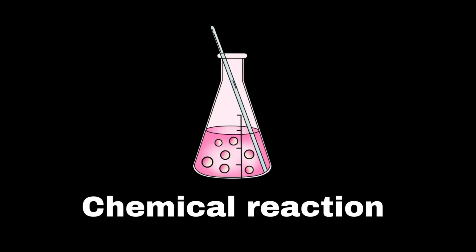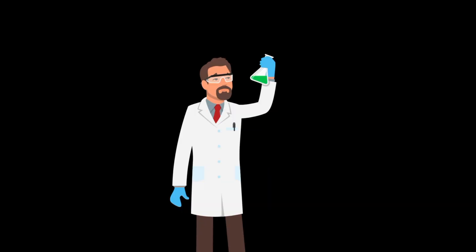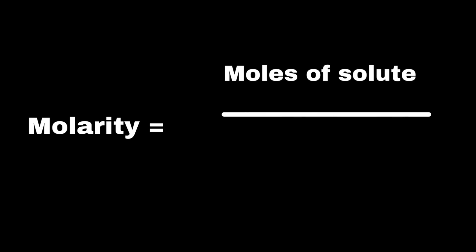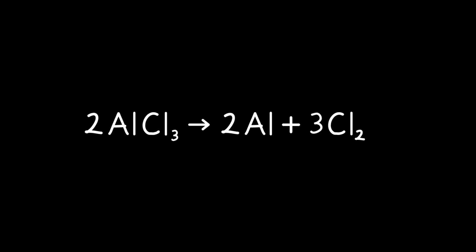There is another important stoichiometry term known as solution stoichiometry. Solution stoichiometry deals with chemical reactions that take place in solutions. A solution forms when a substance called a solute dissolves in a liquid called a solvent. To measure how concentrated a solution is, chemists use molarity, which tells us the number of moles of solute in one liter of solution. You can calculate molarity by dividing the moles of solute by the volume of the solution in liters. When working with solution stoichiometry, you use the molarity and the volume of the solution to find the number of moles, then apply the balanced chemical equation to determine how much of another reactant or product is involved.